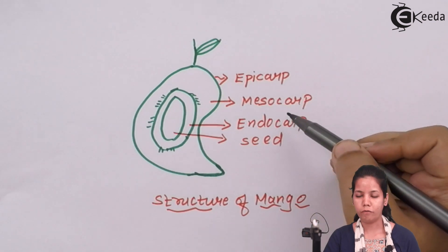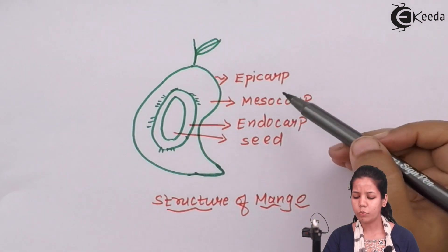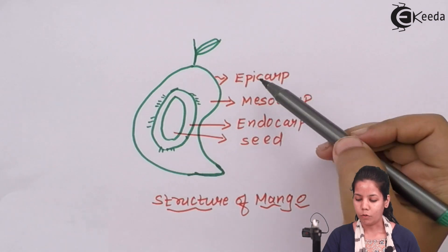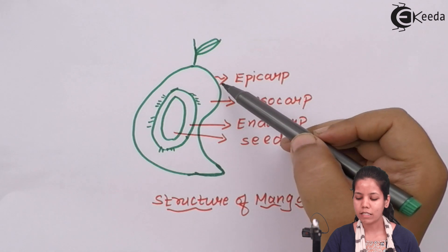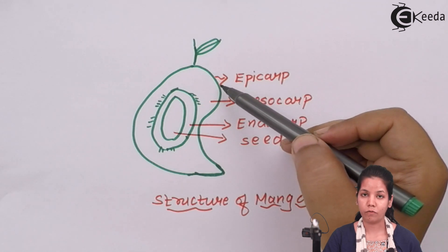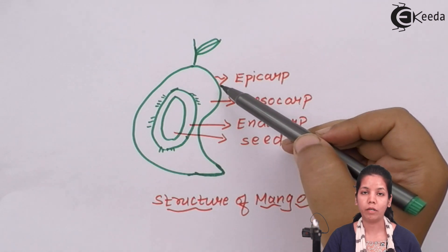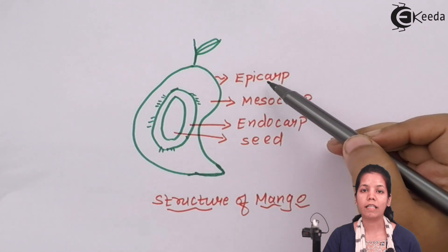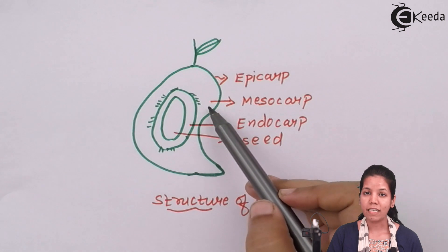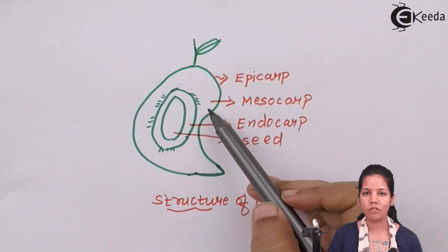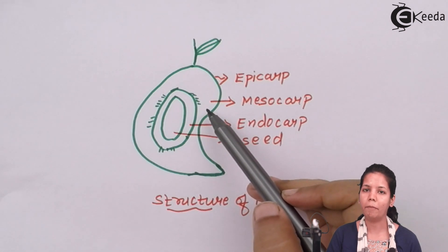This is the structure of a mango fruit showing its various layers. The epicarp is the outermost layer or green covering. In jackfruit, the epicarp is the scaly outer surface. The mesocarp is the fleshy layer we consume when eating mango.